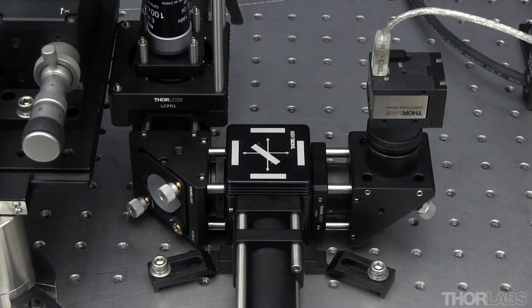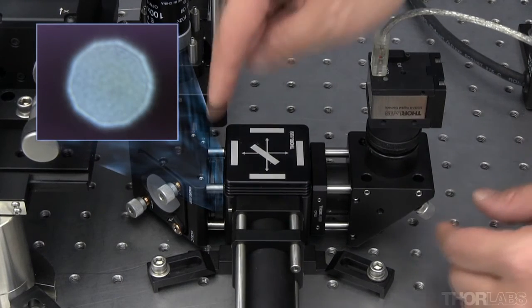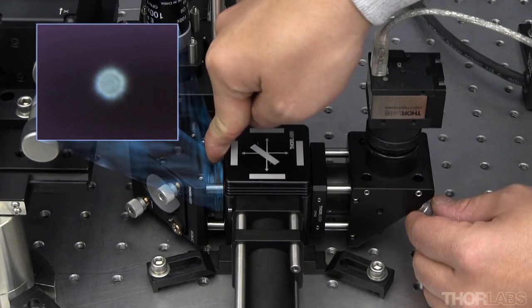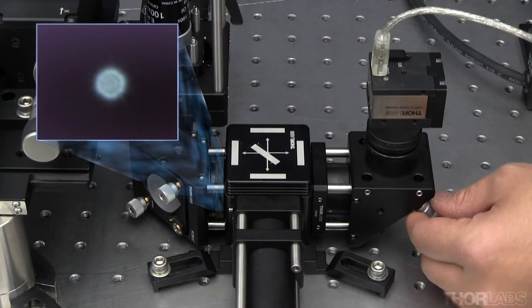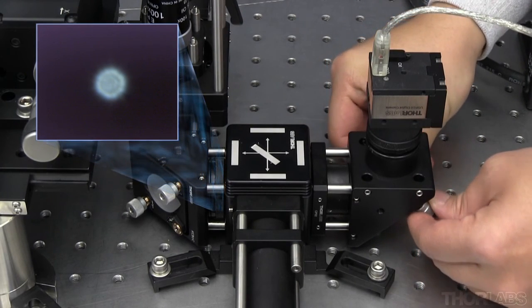Turn on the white light source and observe the image on the camera. Close the camera's iris and, using the camera's mirror, center this dot on the camera. Once centered, remember to open the iris once again.